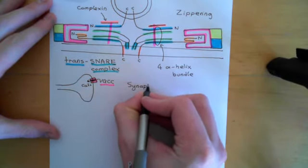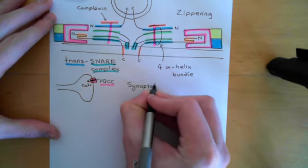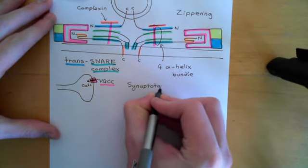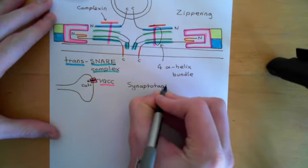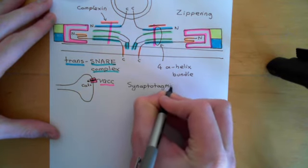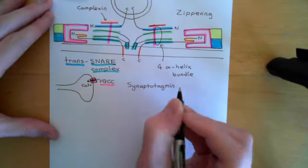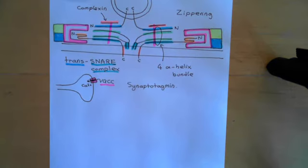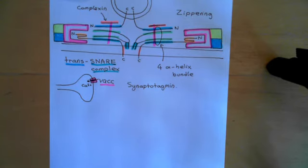Synaptotagmin is another protein that is attached into the membrane of the synaptic vesicle. However, it is not a SNARE protein — it does not have the key SNARE motif, so it's not a SNARE protein.